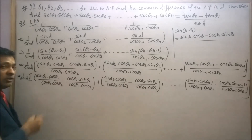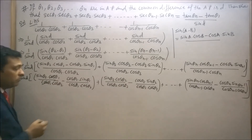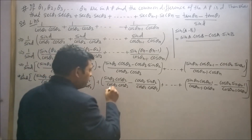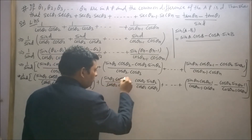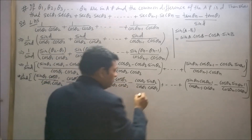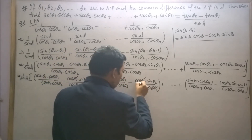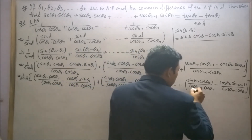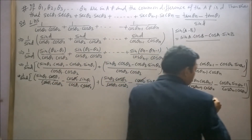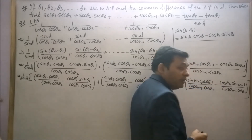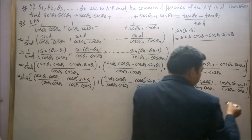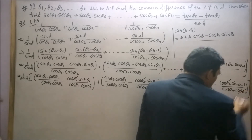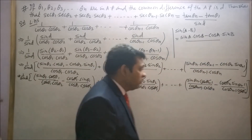Now the cosines cancel: cos θ₁ and cos θ₁ cancel out, cos θ₂ and cos θ₂ cancel out, cos θ₃ and cos θ₃ cancel out, and cos θₙ₋₁ and cos θₙ₋₁ also cancel out. Each term reduces to tan θ₂ - tan θ₁, tan θ₃ - tan θ₂, and so on — this is a telescoping series.